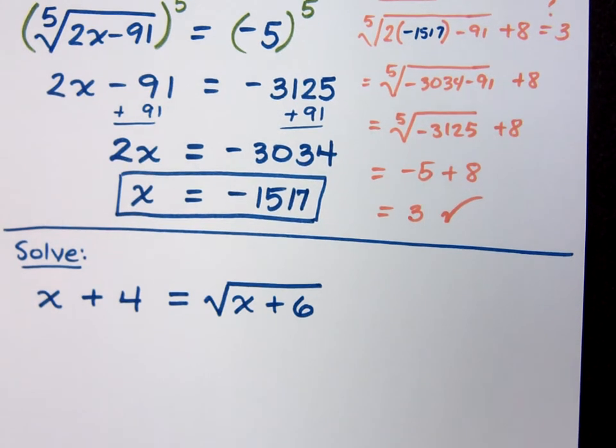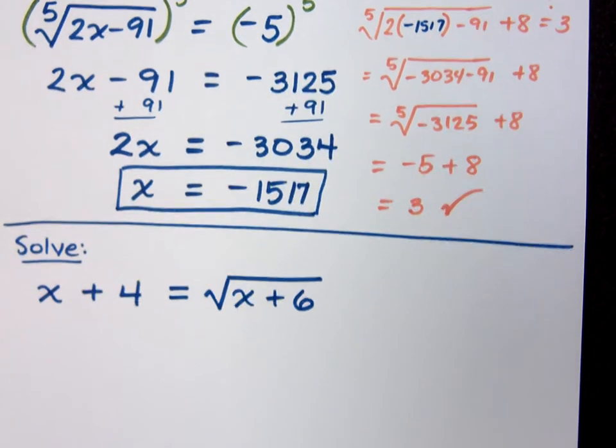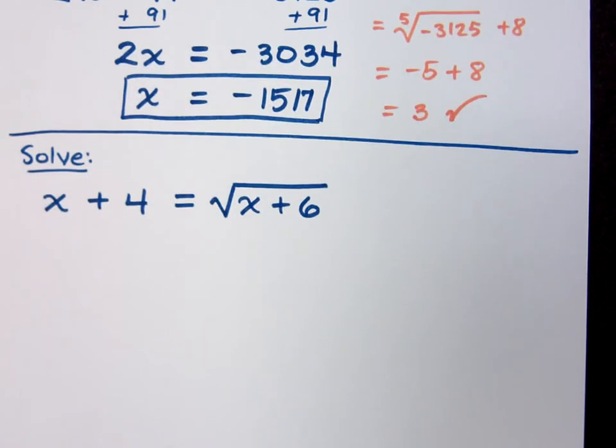Look at this next problem. What would you say? Would we go ahead and square it? Why? Well, because there's nothing that's not on... I don't know how to explain it. Do I have the radical by itself? Yes. Yes, I have the radical by itself. Now I have to use the power property and raise both sides to the appropriate power. Second power.